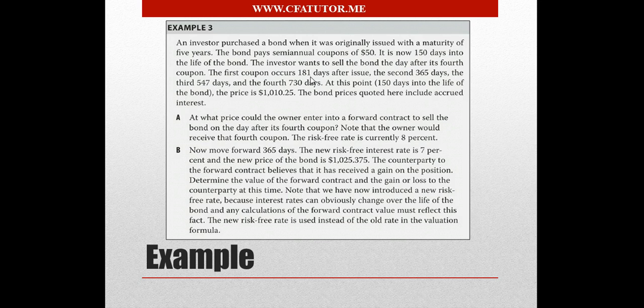It's now 150 days into the life of the bond, and the investor wants to sell the bond the day after its fourth coupon. The first coupon occurs 181 days after the issue, the second 365 days, the third 547 days, and the fourth 730 days. Basically, now we are at 150 days, and the investor is willing to sell it at 730 days, which is 580 days from now.